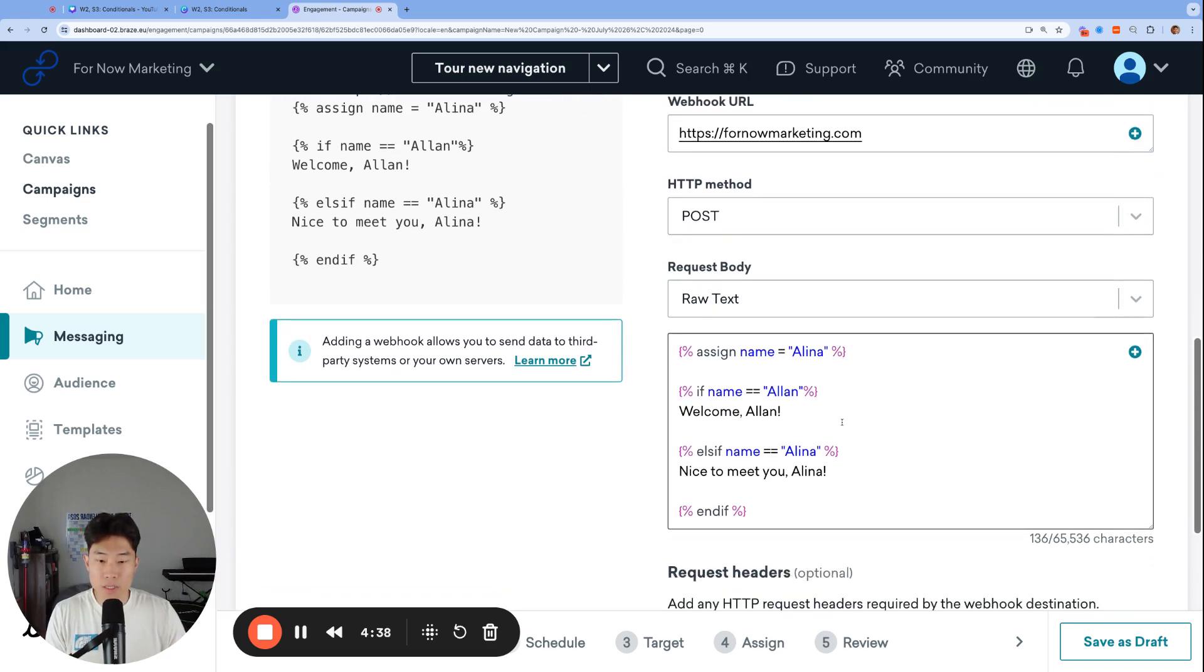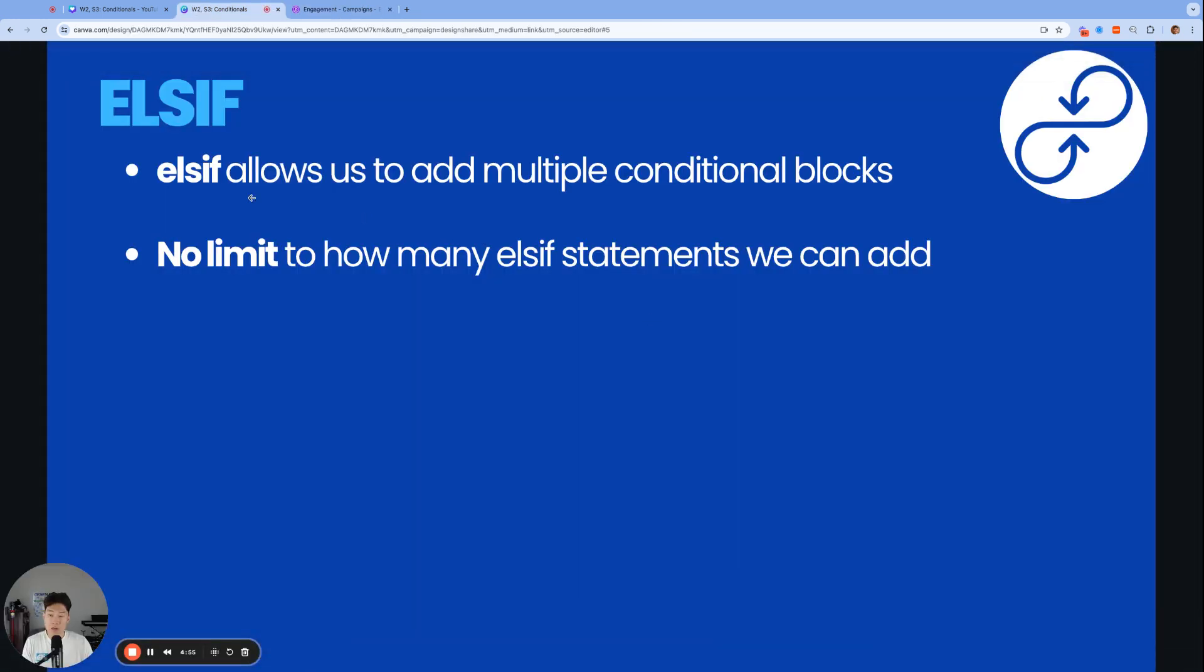And by the way, we call each of these conditional statements, we call them blocks. So I would see this as one conditional block. That is the next conditional block or specifically the else if conditional block for name equals Alina. So here in this example, I would say we have two conditional blocks. So else if is what allows us to add multiple conditional blocks in our liquid conditionals. And there is also no limit to how many else if statements we can add.